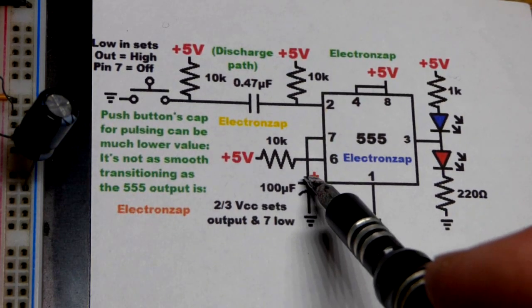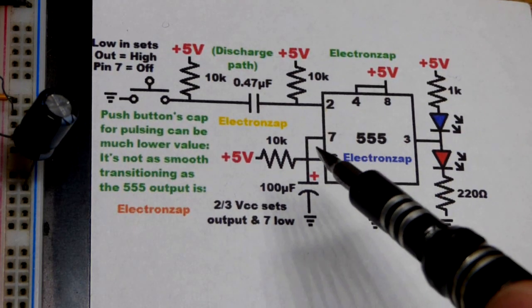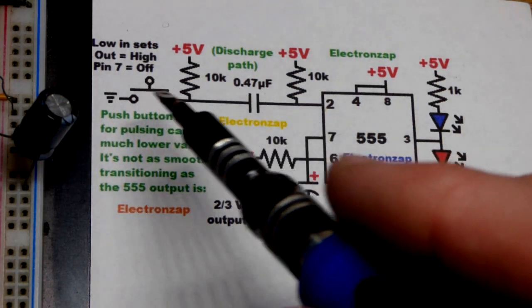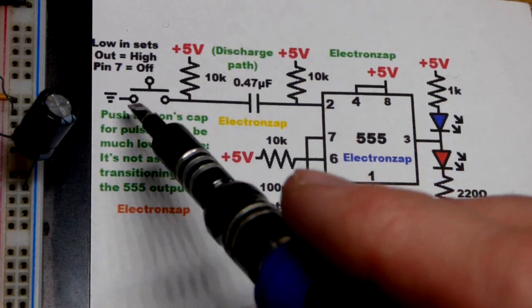And so you don't want to use way too high of a value capacitor there. 100 microfarad might be about as high as you want to go. So in any case, low pulse results in the output going high.